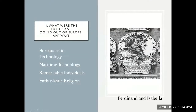There were a few other changes responsible for the Europeans being out of Europe: the development of bureaucratic technology — things like bookkeeping, double-entry bookkeeping, systems of taxation, and systems of keeping track of the nation's wealth — are developed at this time and make it possible to fund these kinds of expeditions. Mechanical printing is also important.